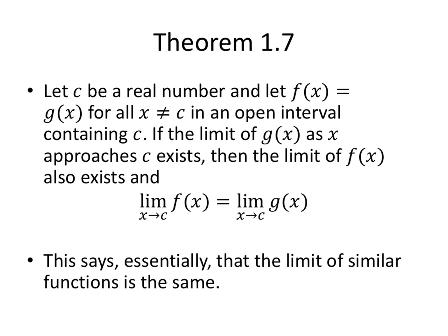And theorem 1.7 is a theorem. It doesn't have a fancy name, but it's so important. Let C be a real number, and let F of X equal G of X for all X except for C in an open interval containing C. So they might have a different output at the C value, but near there, they're the same. If the limit of G of X as X approaches C exists, then the limit of F of X also exists, and they're equal. So this is essentially that the limit of a similar function is the same. Now remember, we don't care what happens at C. So a lot of times what we're going to do is get rid of, in special mathematical ways, the problem spot, and find an easier function that we can actually evaluate.